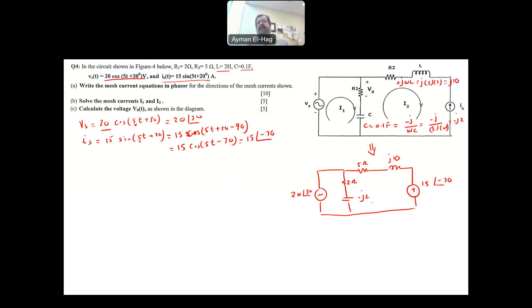Now the circuit is basically represented in the frequency domain, and now I can start solving the questions. So here we'll have my I1, and here is my I2. The first question says, write the mesh current equations in phasors for the directions of the mesh current shown. So you are given here the mesh current, so you will need to write the equations basically in phasors.